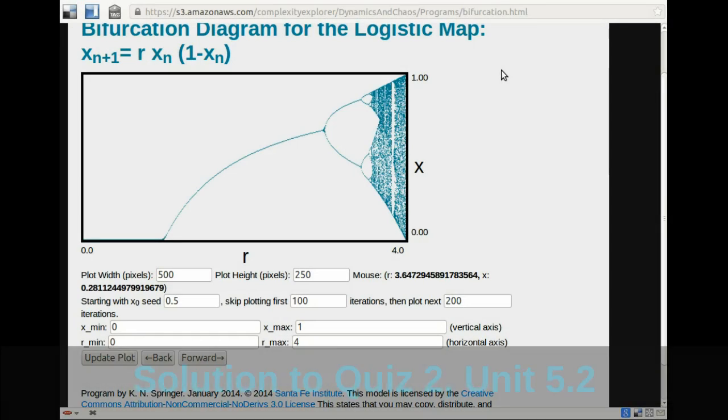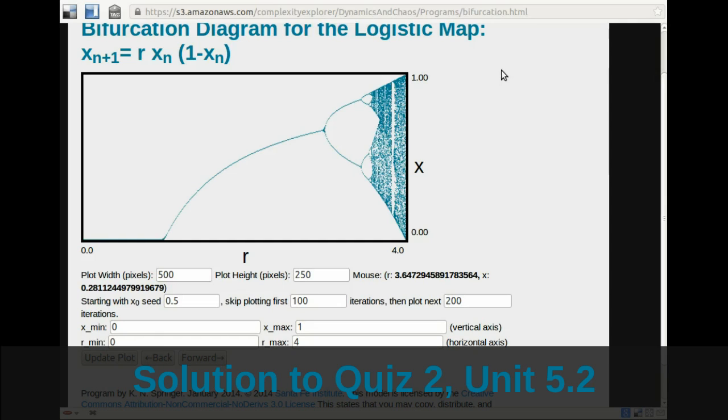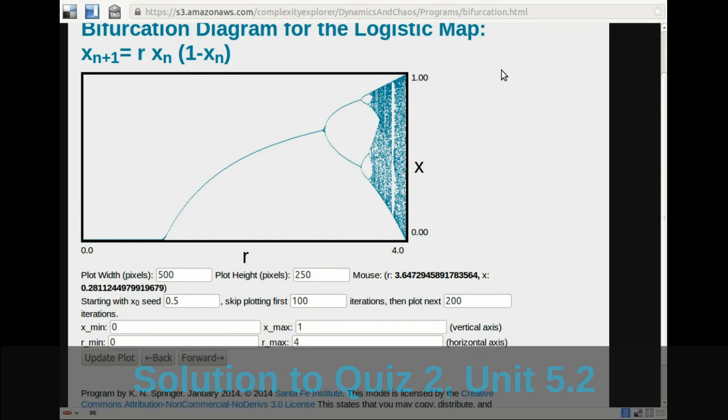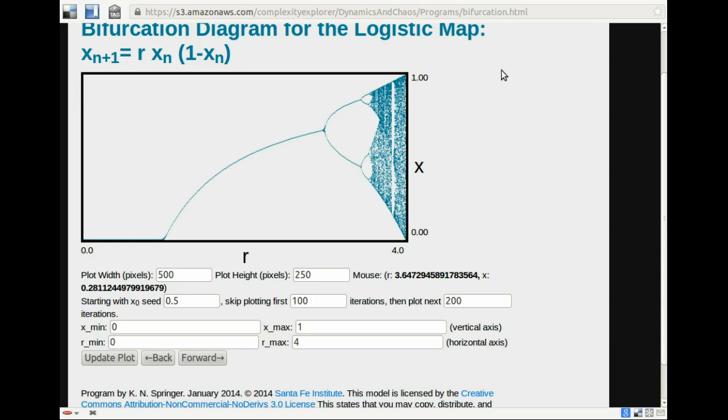So here are the solutions to quiz 2 from unit 5.2. The first question asked about r equals 1.8. What value is the fixed point?